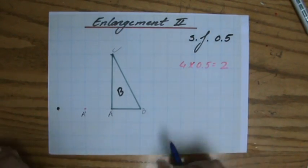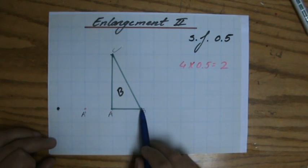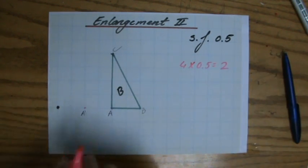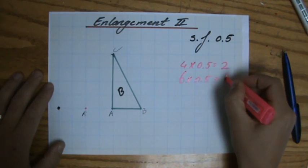What about B? It used to be 1, 2, 3, 4, 5, 6 blocks away from the center. So 6 times a half, it's going to be now 3 blocks away.